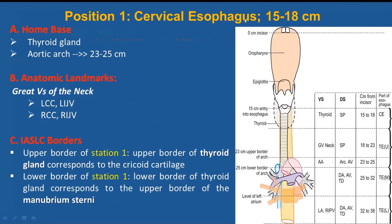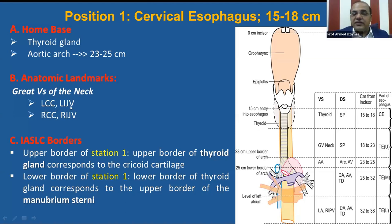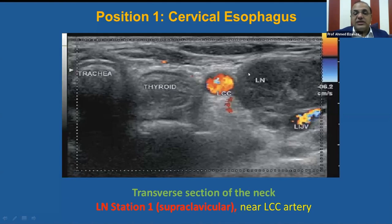Position 1 is at the cervical esophagus, 15 to 18 centimeters. The anatomical field includes the great vessels of the neck: left common carotid, left internal jugular vein, right common carotid, and right internal jugular vein. This image shows a transverse section of the neck with the trachea and the esophagus behind it. This is the left lobe of thyroid gland, left common carotid artery, left internal jugular vein, and the lymph node close to the left common carotid artery — this is lymph node station 1, the subclavicular lymph node.